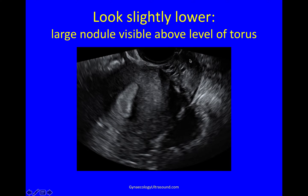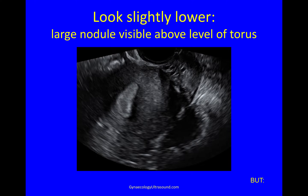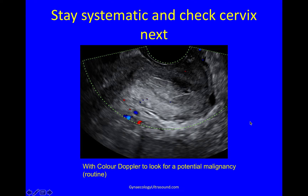Just putting the probe and angling it slightly more backward, looking lower, we suddenly see a large nodule just above the level of the torus. But we don't want to get distracted by this just yet — we're doing a systematic scan. So we're going to look at the cervix next. I always look at the cervix in the longitudinal plane, sweeping from side to side, then put a colour Doppler box on just to check that there isn't an obvious tumour hiding there. I always do that.